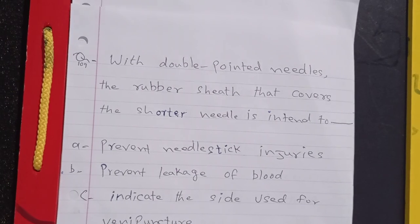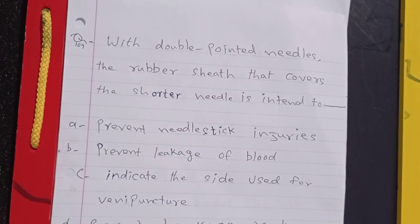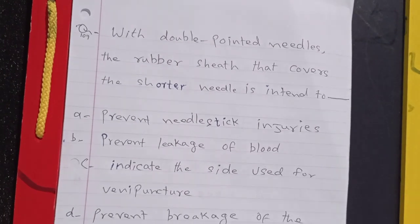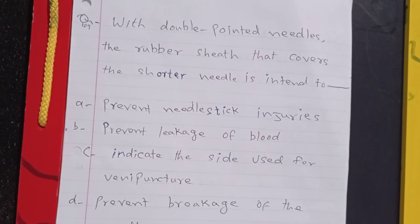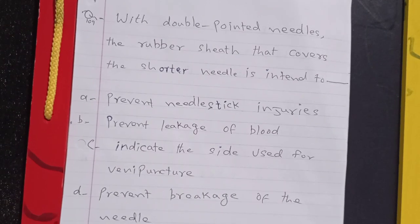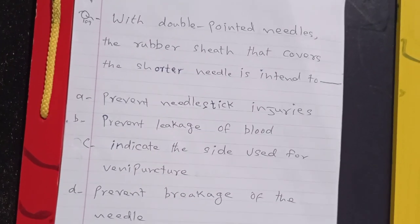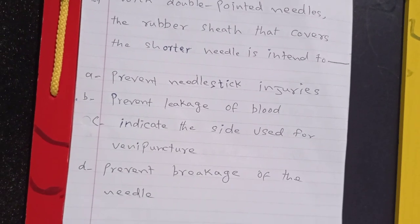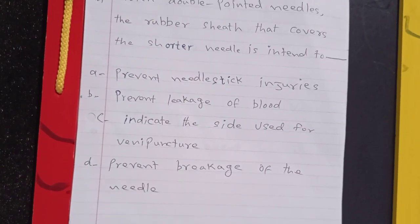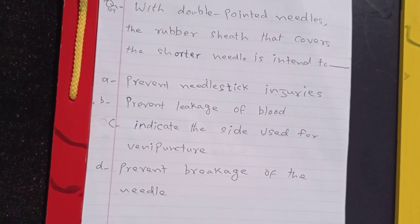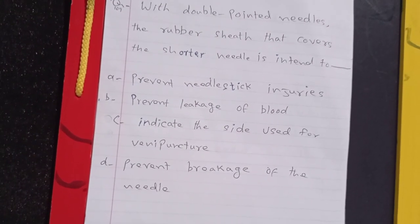With double-pointed needles, the rubber sheet that covers the shorter needle is intended to: prevent needle-stick injuries, prevent leakage of blood, indicate the side used for venipuncture, or prevent breakage of the needle. The answer is B: prevent leakage of blood.